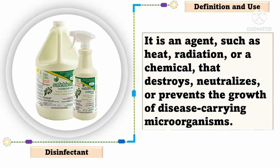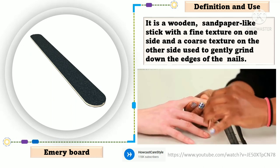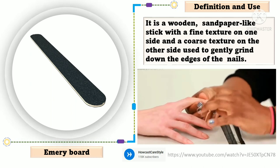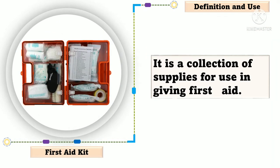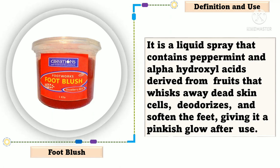Disinfectant is an agent such as heat, radiation, or a chemical that destroys, neutralizes, or prevents the growth of disease-carrying microorganisms. Emery board is a wooden sandpaper-like stick with a fine texture on one side and a coarse texture on the other side used to gently grind down the edges of the nails. First aid kit is a collection of supplies for use in giving first aid. Foot blush is a liquid spray that contains peppermint and alpha-hydroxy acids derived from fruits that whisks away dead skin cells, deodorizes, and softens the feet, giving it a pinkish glow after use.